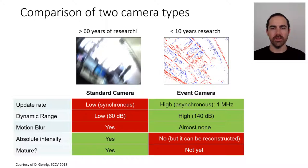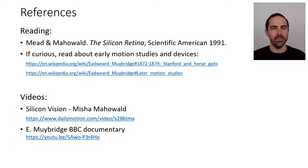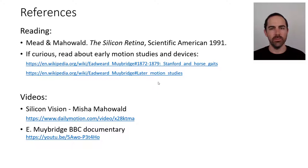During the course, we will study these two types of sensors, mostly introducing the new type — event-based cameras — since almost everyone already knows a video camera. For further reading, I recommend Mead and Mahowald's 1991 paper in Scientific American called 'The Silicon Retina.' If curious, you can also read about Muybridge and his early motion studies. I also recommend two videos: one about Mead and Mahowald, and one about Muybridge. Thank you very much.